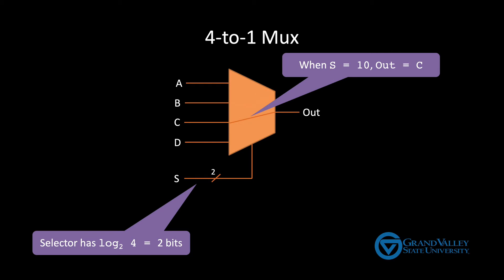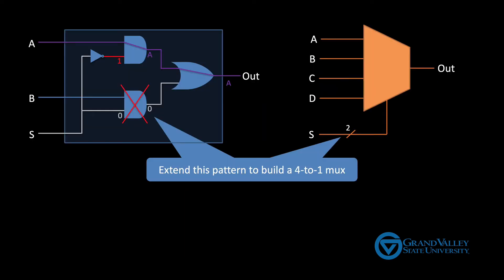When S is 1, 0, the output is equal to C. And when S is 1, 1, the output is equal to D. So think about how you can extend the pattern of blocking some inputs and passing through others to build a 4 to 1 MUX. Pause the video and see if you can figure it out.